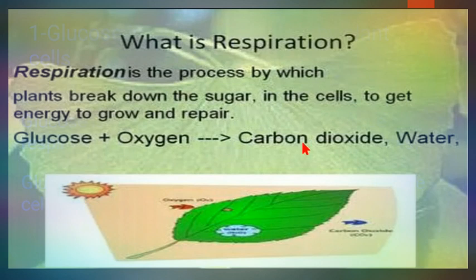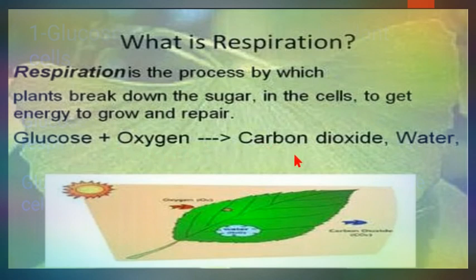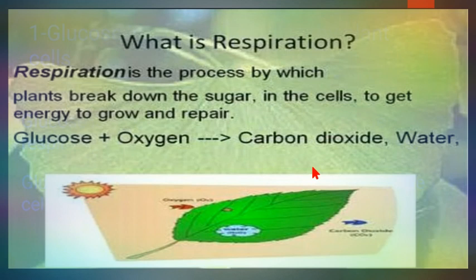Some of the carbon dioxide produced is used in photosynthesis as a reactant, and some is released into the atmosphere. At nighttime, no photosynthesis occurs, so only respiration happens — plants take in oxygen and give out carbon dioxide. That's why it is said: do not sleep under a tree at night, because oxygen can become deficient and carbon dioxide accumulates.